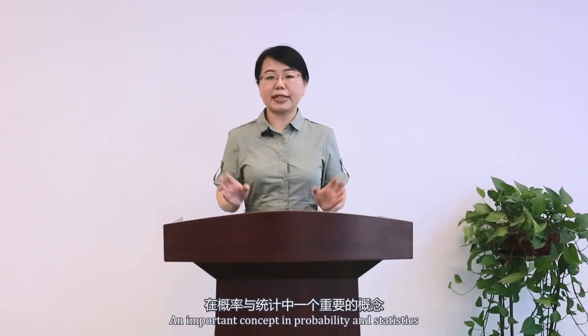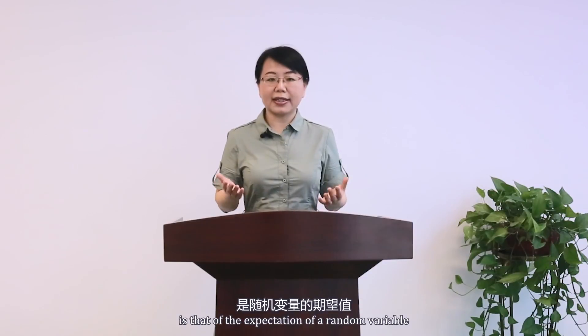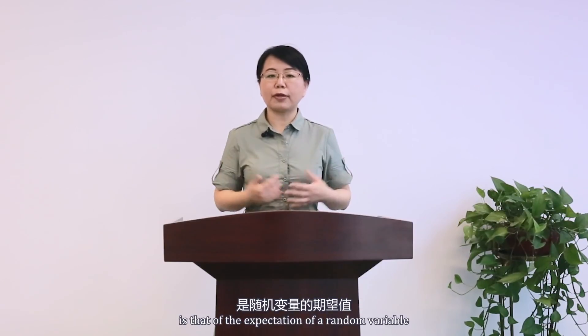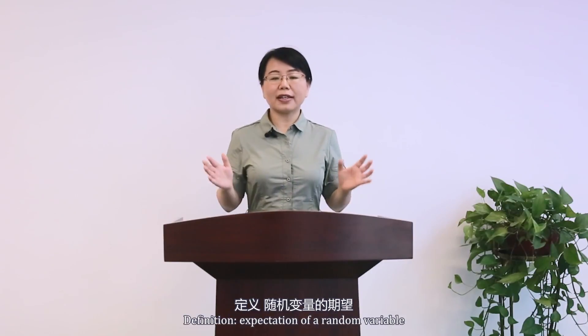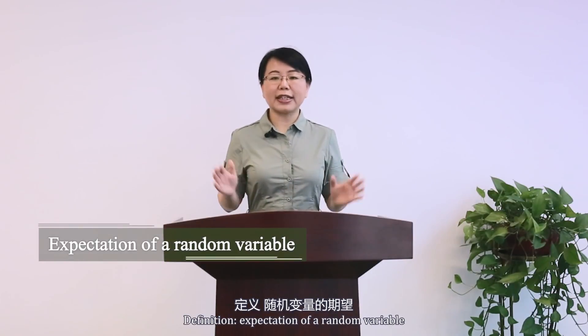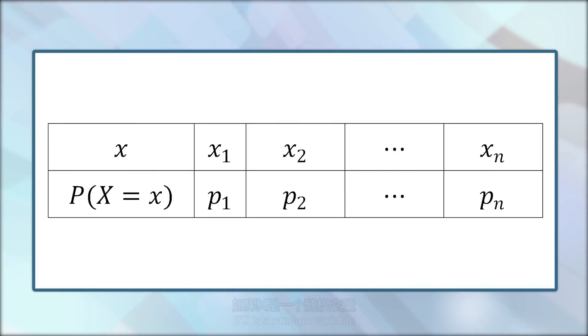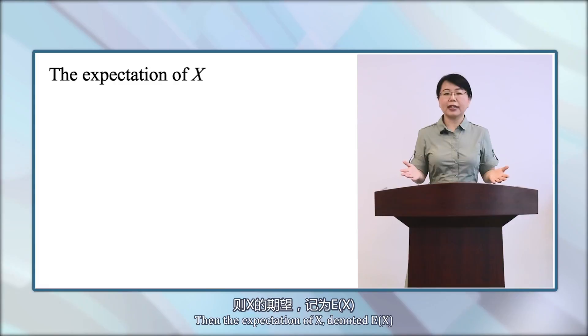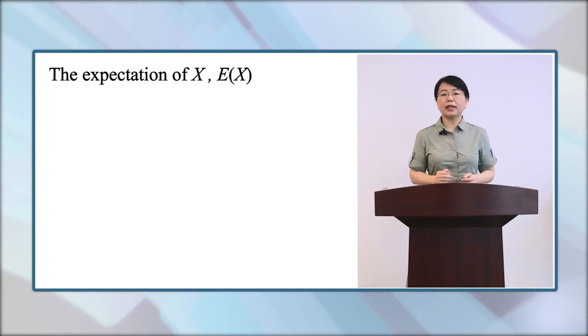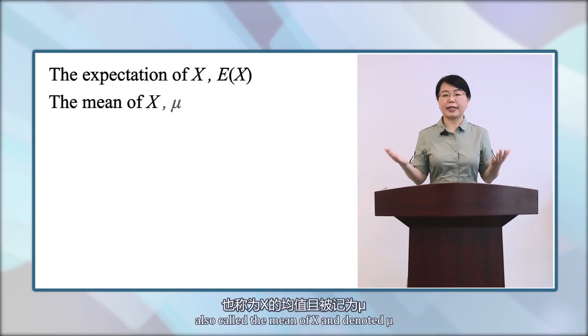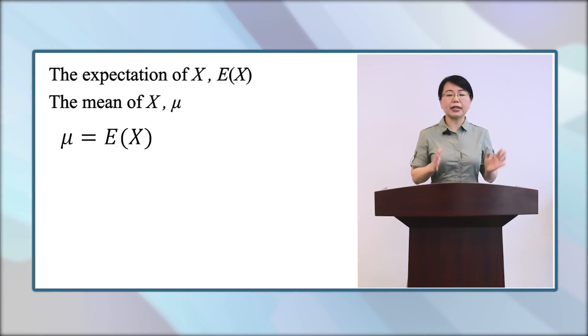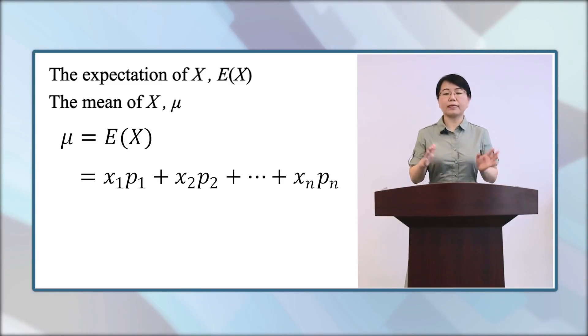An important concept in probability and statistics is that of the expectation of a random variable. If X is a random variable with probability distribution, then the expectation of X, denoted as E(X), also called the mean of X and denoted as mu, is E(X) equals X1 times P1 plus X2 times P2, and so on.